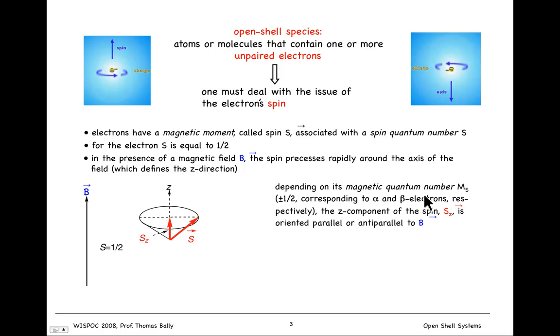The magnetic quantum number, M sub S, then is plus or minus a half. We call those alpha or beta electrons, depending on whether the Z component is parallel to the field or anti-parallel to the field. So here's the MS equals minus one-half component. Here's the MS equals plus one-half component. That shows the two possible orientations that have quantized SZ values.